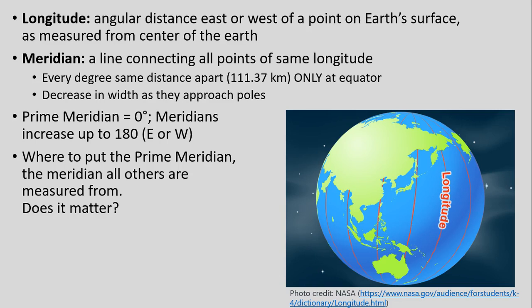Moving to longitude. Again, now we're kind of flipping it around where angular distance is east or west of a point on the Earth's surface. Again, measured from the side of the Earth. And these lines sometimes are also known as meridians. So these lines that connect all points of the same longitude. And note the difference here from latitude is that every degree here has the same distance apart only at the equator. So again, it's that same, pretty much same distance, about 100 kilometers at the equator. But note that this decreases in width as meridians approach the poles, again, whether it's the North or South Pole, because all of those meridians are converging and come together at both the North and South Pole.